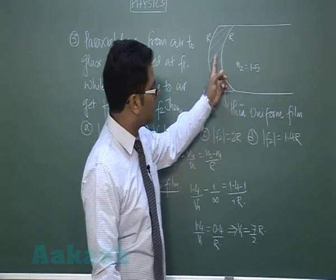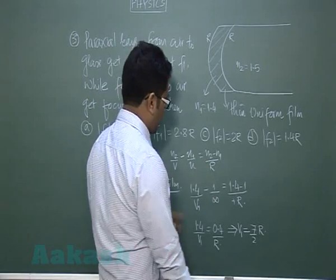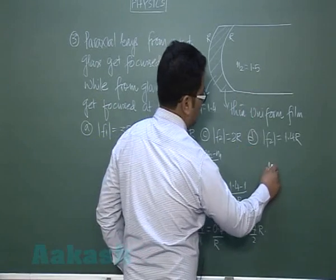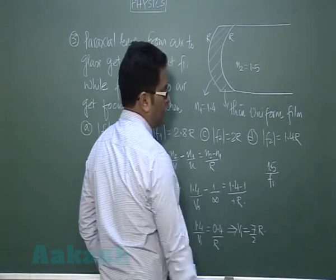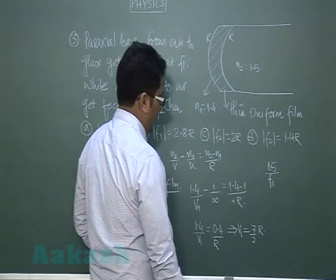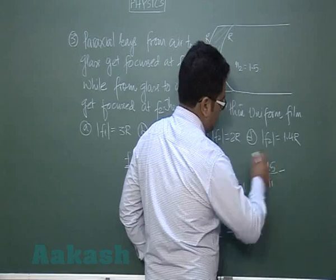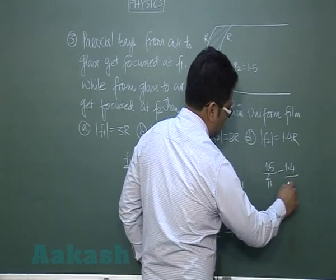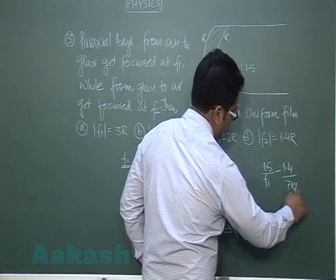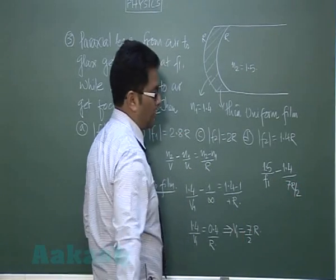And f1 is the final image when it travels from film to glass. So for that, n2 would be 1.5 and v itself is the focal length, and minus n1 would be 1.4, and u would obviously be 7r by 2. The image of first is the object of second.